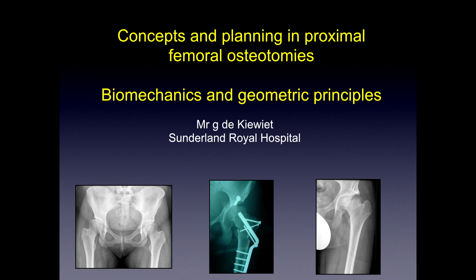What I want to do here is to continue from what we've been doing throughout this week in terms of planning and looking at ideas around the hip joint and the issues that we need to consider when we're doing proximal femoral osteotomies — a little bit about biomechanics and geometric principles.